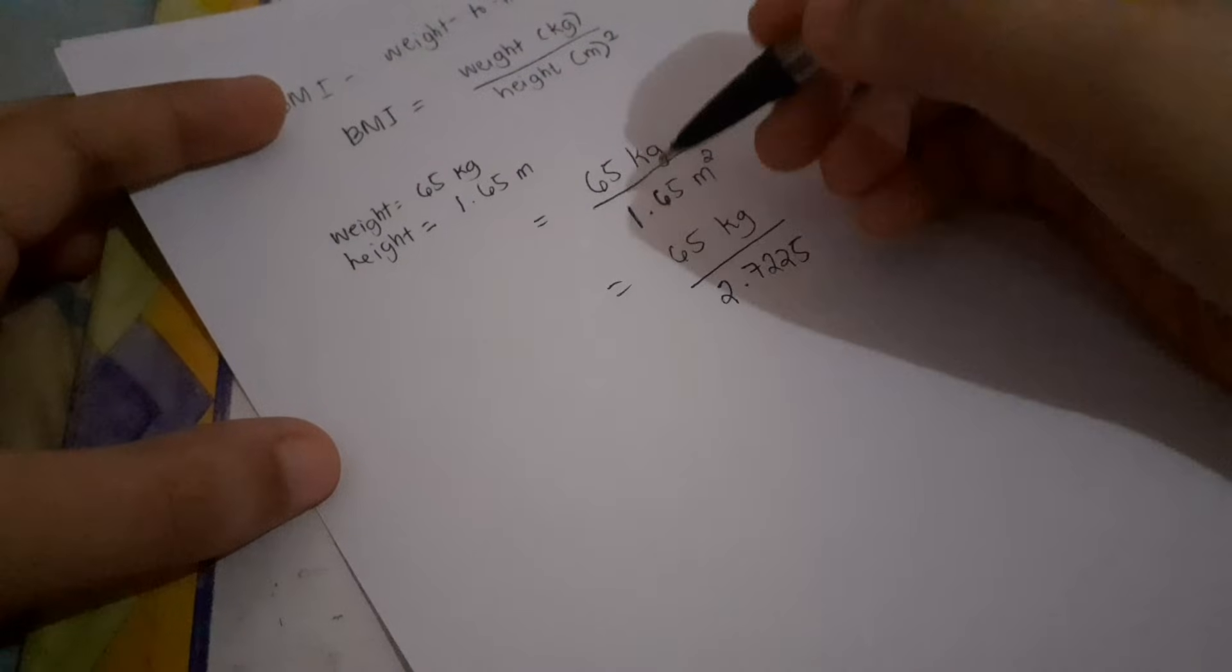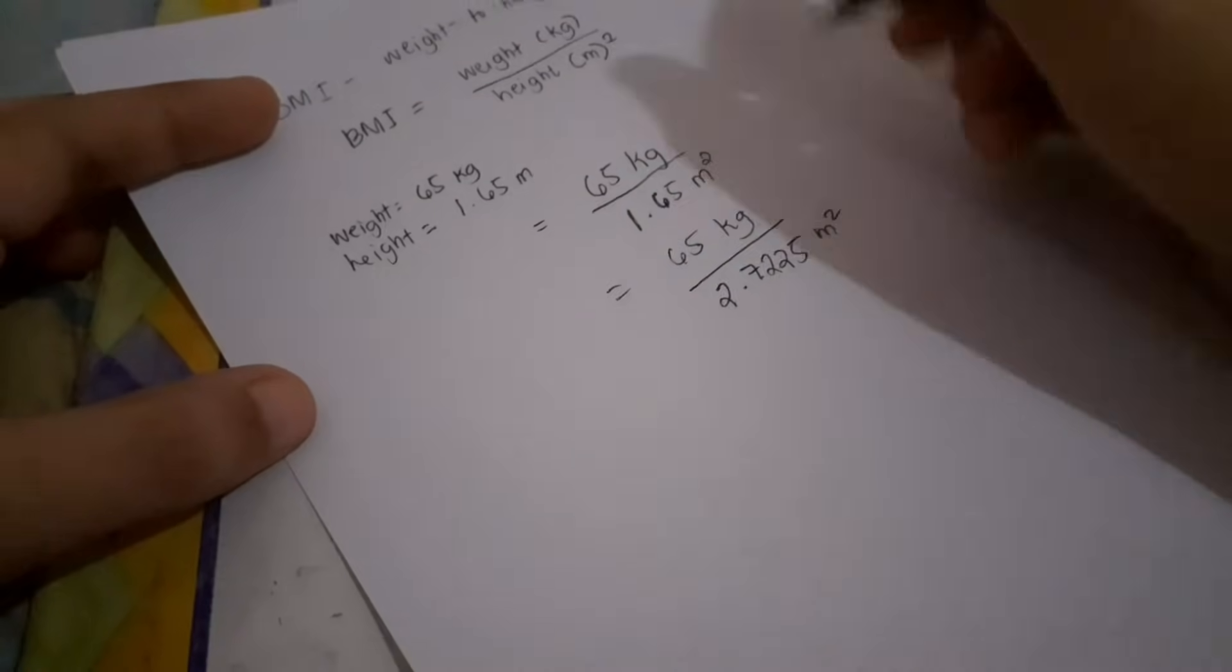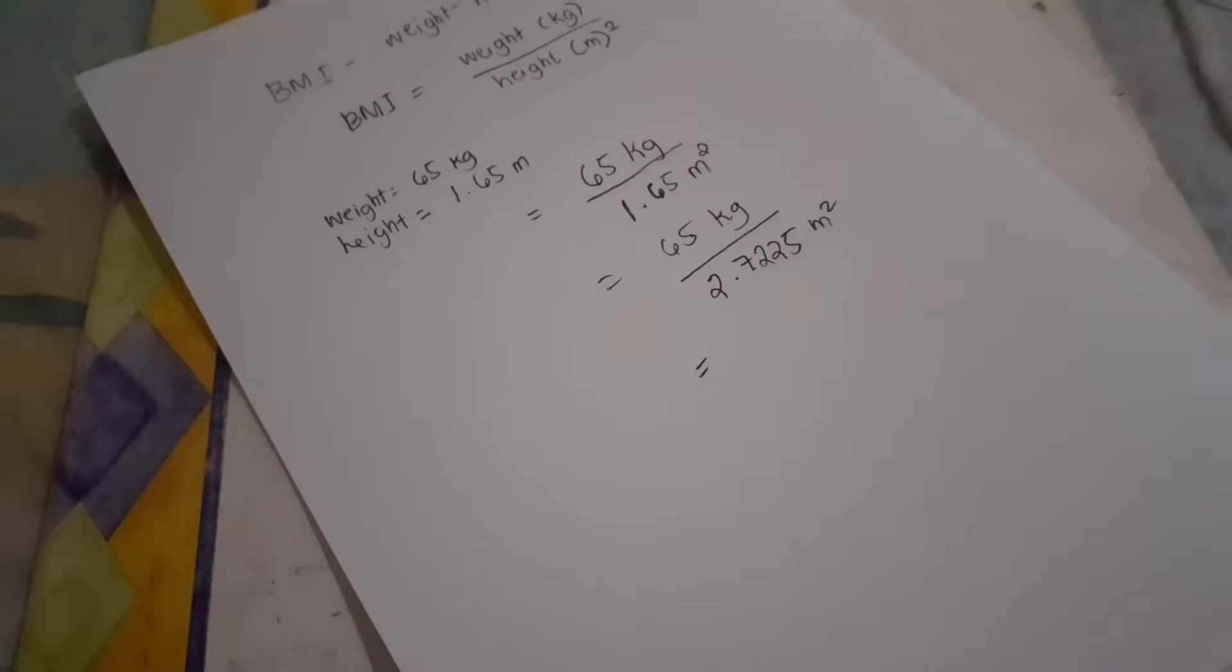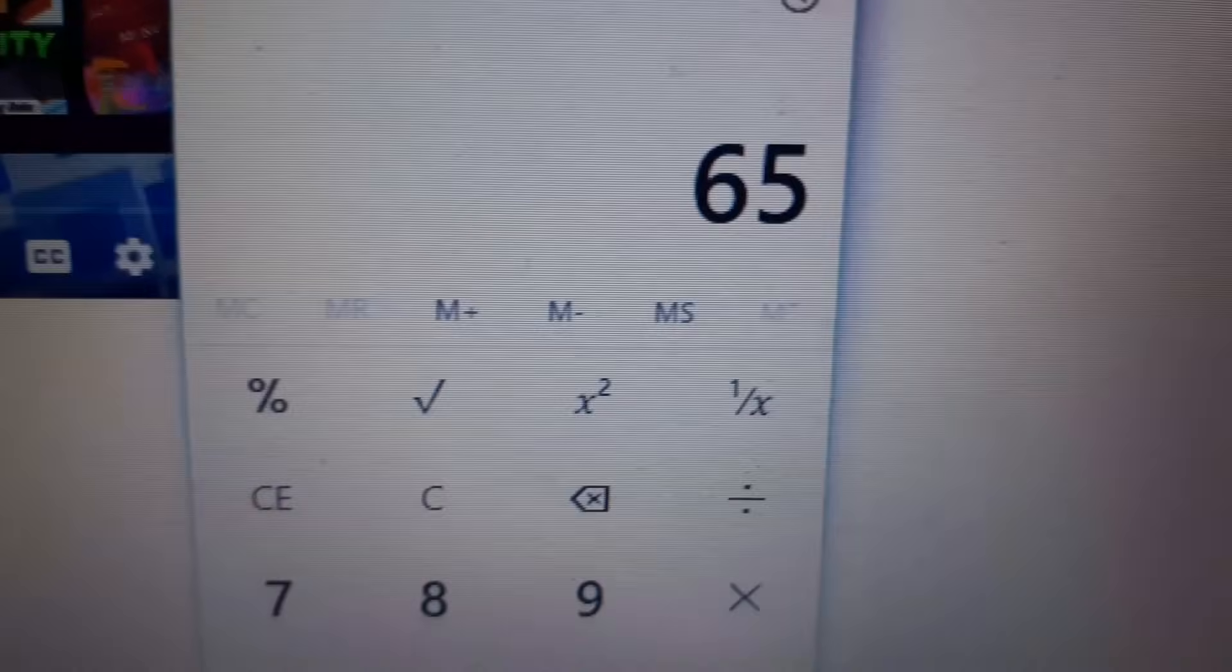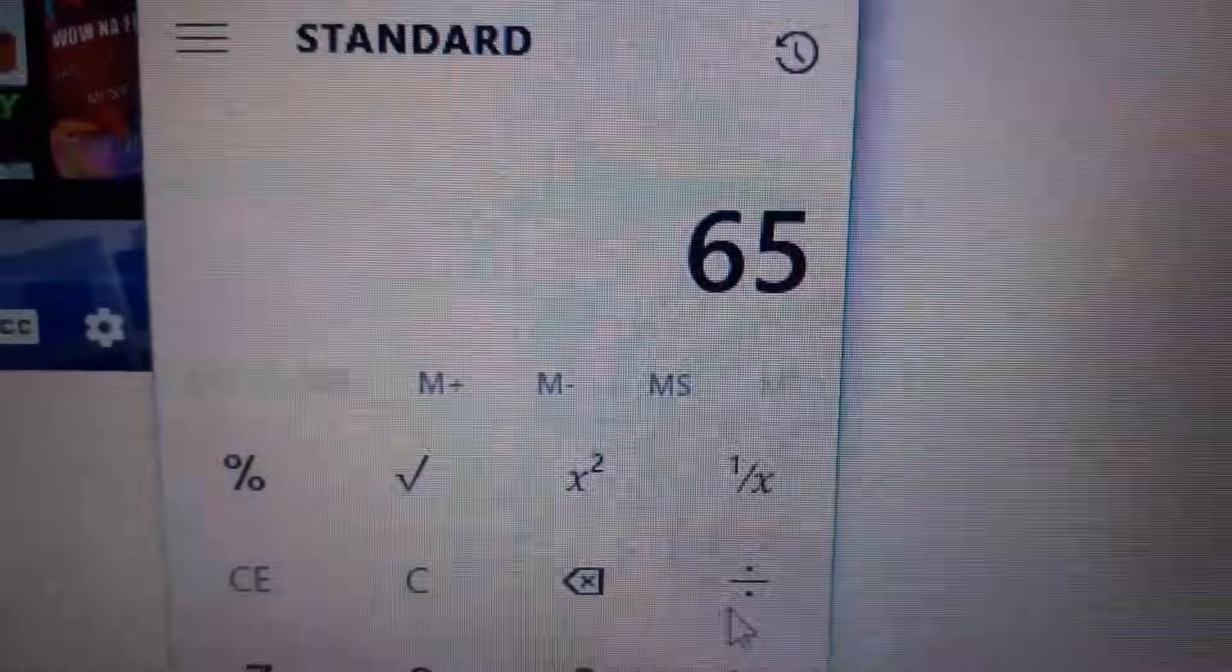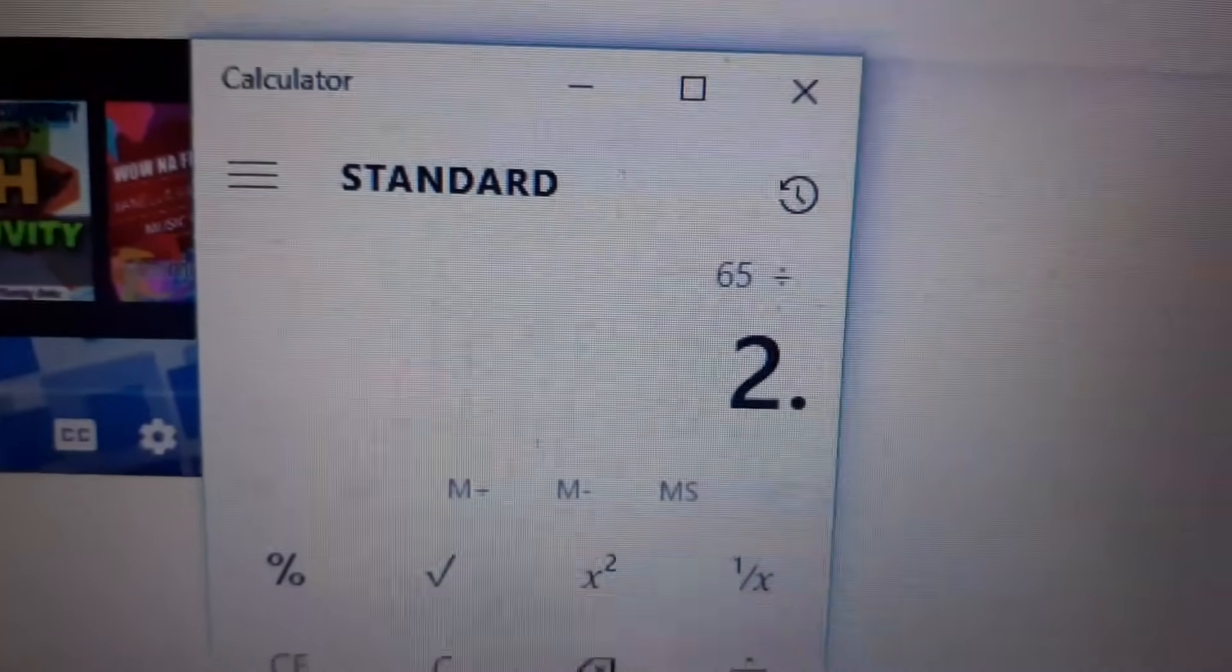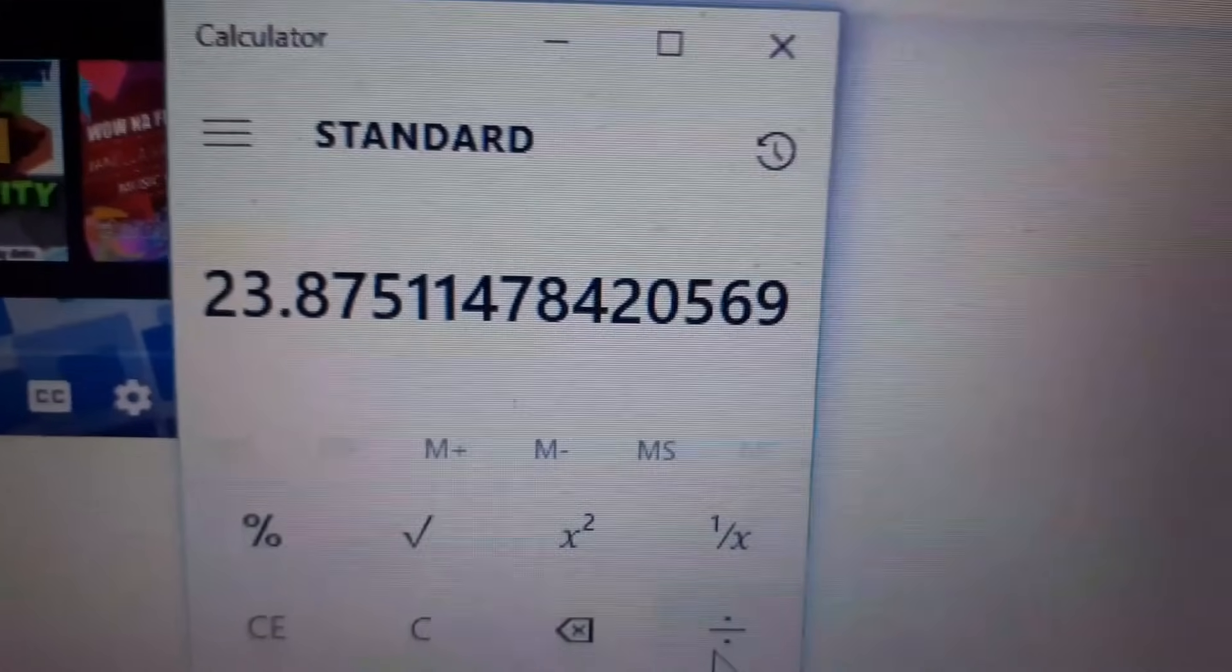So ang next dyan, i-divide mo na itong 65 dito. So ang magiging sagot ay, calculate nyo ulit. So 65 divided by 2.7225. The answer is?